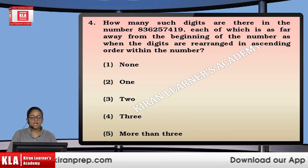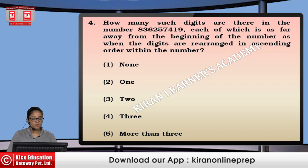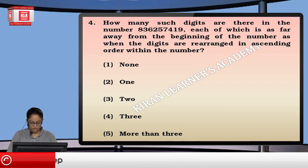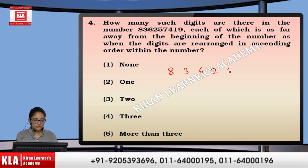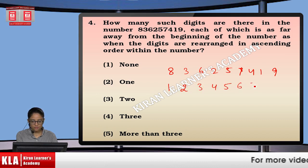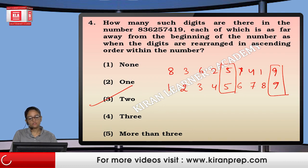Next: how many digits in the number 8, 3, 6, 2, 5, 7, 4, 1, 9 are as far from the beginning of the number as when the digits are arranged in ascending order? Arranging in ascending order gives 1, 2, 3, 4, 5, 6, 7, 8, 9. Comparing positions, the digits which do not change their places are 2 in number. So the answer is option number 3.